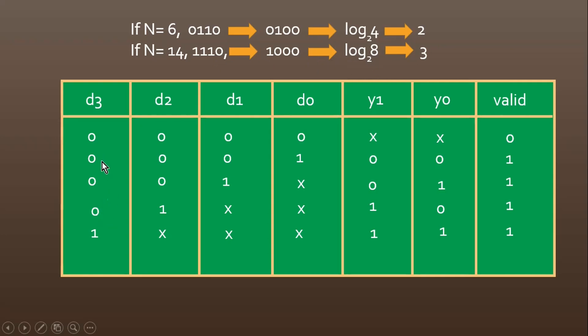Now let us consider the other case. When d3 is 0, d2 is high, I don't care about d1 and d0, and my output is going to be 10 always.